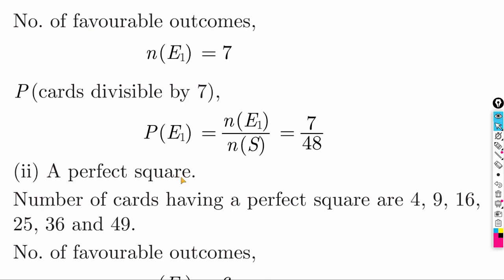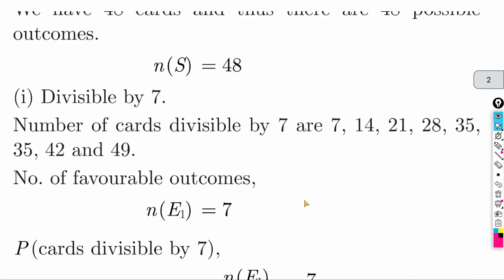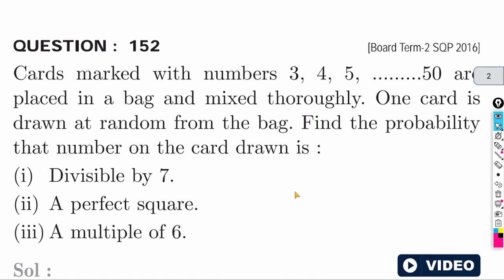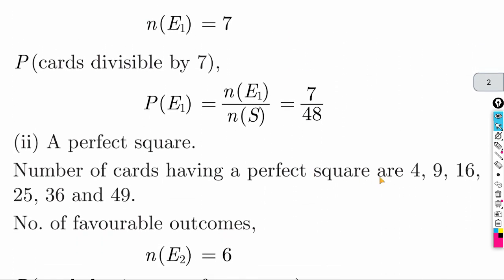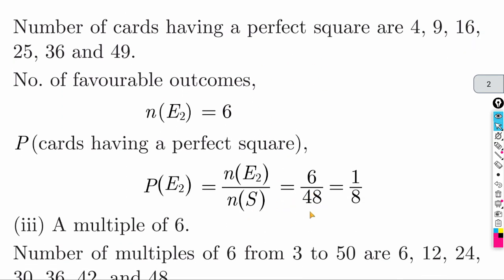We also need to find the probability of a perfect square. Numbers start from 3, so 1 is excluded. Perfect squares between 3 and 50 are: 4, 9, 16, 25, 36, 49 — that is 6 favorable outcomes. Total = 48. Answer is 6 by 48, which simplifies to 1 by 8.